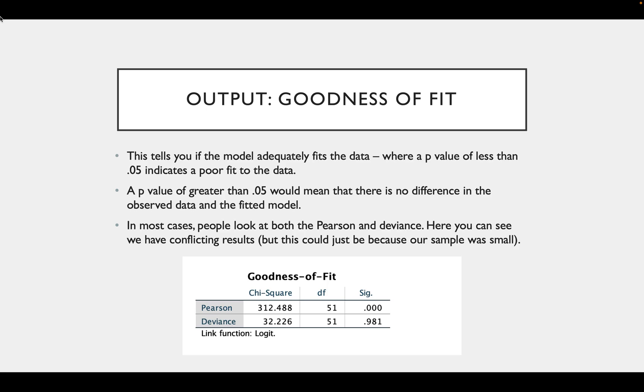In most cases, people look at both the Pearson and the deviance test. Here you can see we do have a conflict in results, but obviously our regression was run on a very small dataset.